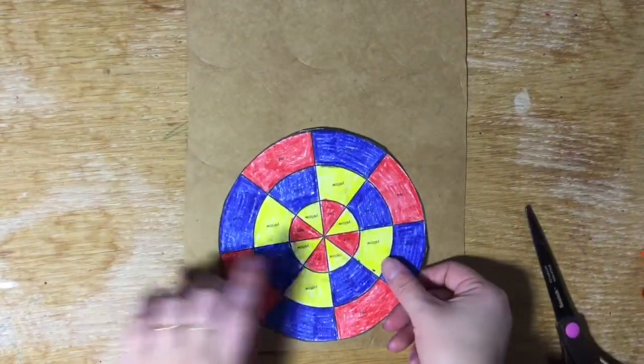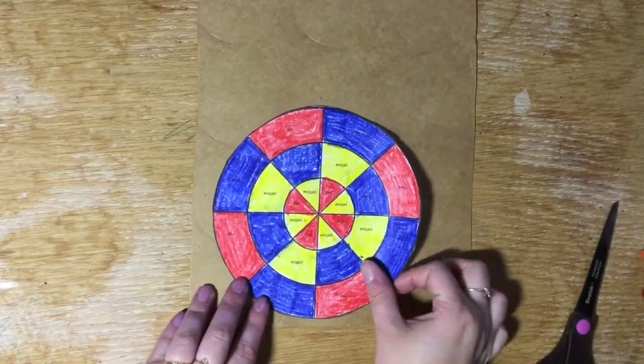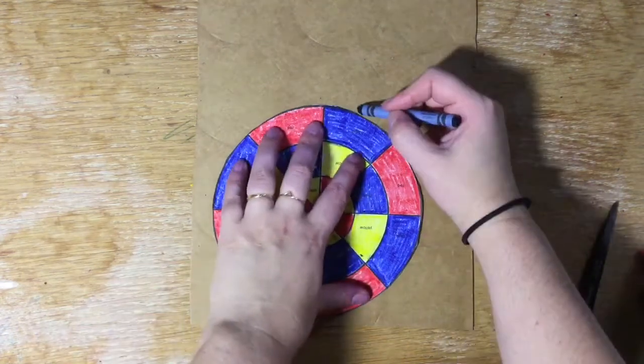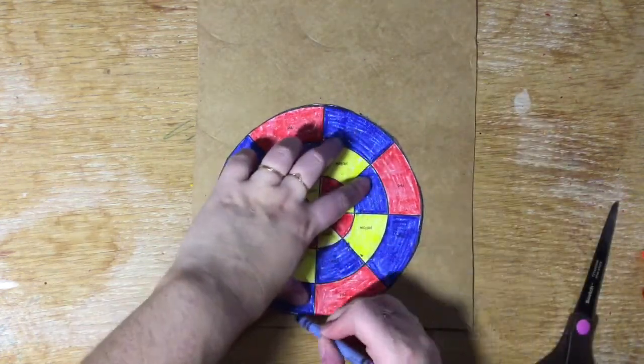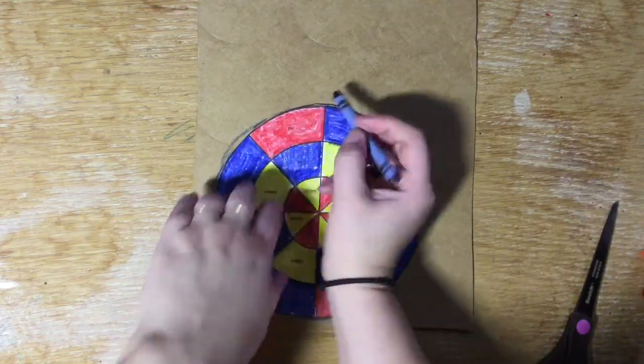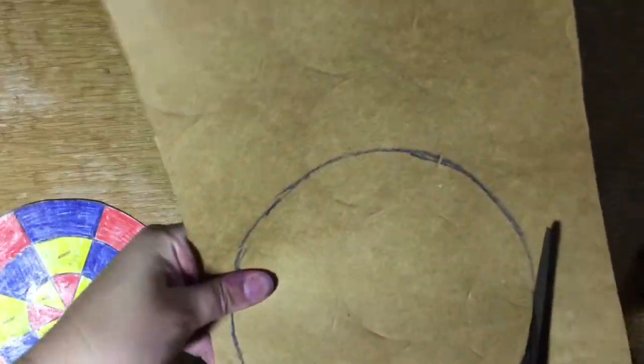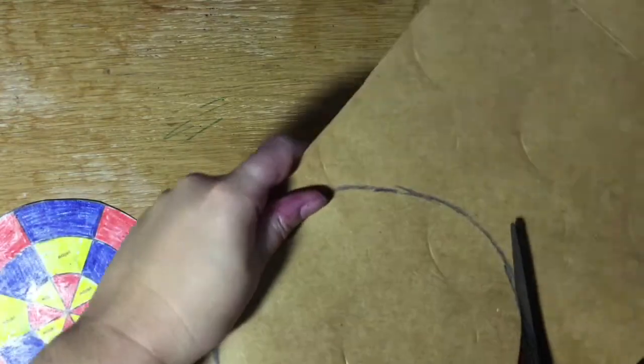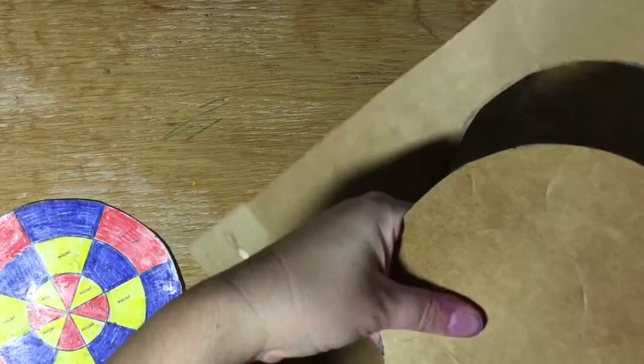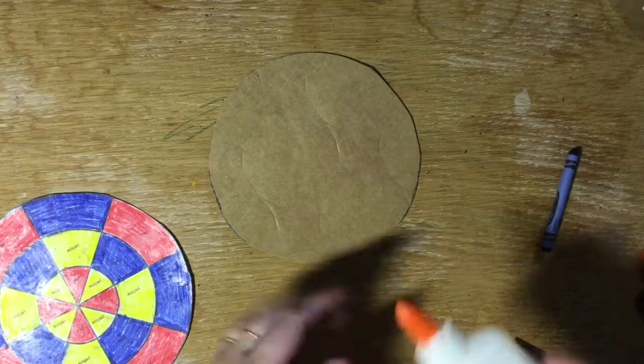Now I'm going to glue this to my thin piece of cardboard. That way it's not floppy when we go to spin it. So first I'm going to trace it. I'm just gonna use this crayon to trace it. Notice I'm tracing it towards the edge of the cardboard. That's so that I can use the rest of this cardboard later on if I need to. Now I'm gonna cut out my cardboard circle with my scissors. It's gonna be a little bit harder because the medium is thicker.